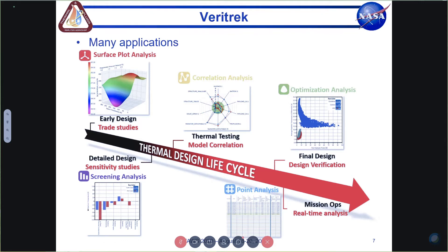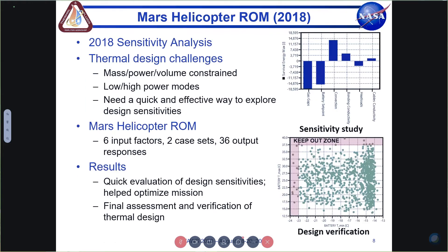Veritrekt has been used with a number of customers, including several NASA centers — JPL, NASA Marshall for lunar lander work, and NASA Johnson. Applications include early-stage design trade studies, sensitivity studies later in design, rapid thermal model correlation with the new correlation capability, optimization analysis for final design verification, and — as in this presentation — as a real-time mission ops tool.